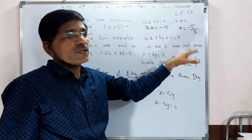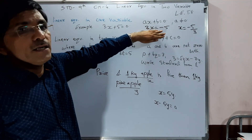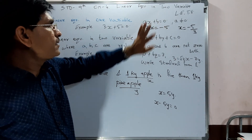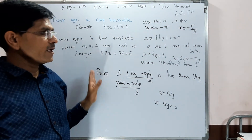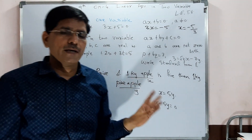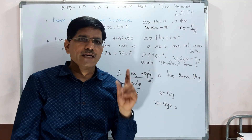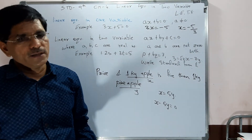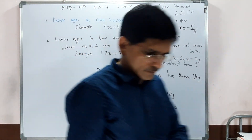A and b cannot both be 0, otherwise the equation cannot exist. Examples 1 and 2 are completed. For homework, exercise 4.1 — you have to complete it. That is sufficient for today's lecture. Thank you.